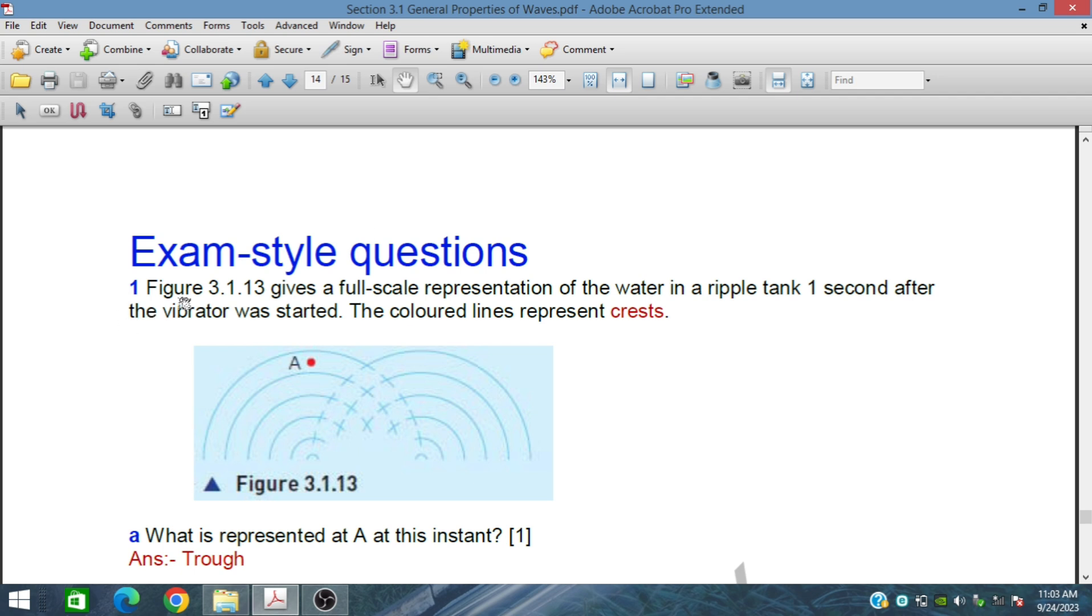Here in the first question, we have given a figure 3.1.13 and this figure gives a full scale representation of water in a ripple tank. This wave is produced in a ripple tank 1 second after the vibrator was started. The vibrator started here and produced this kind of waves. These lines are all crests.